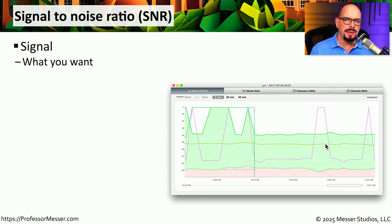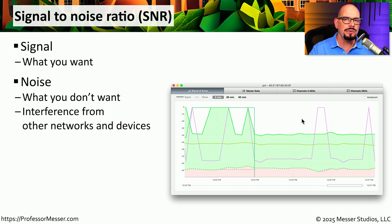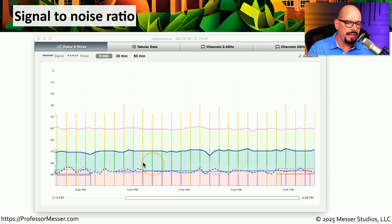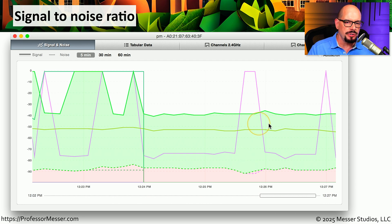Many operating systems can provide an overview of signal-to-noise ratios and create a graph over time so you can see how much interference may be in the air. With a signal-to-noise ratio (SNR), we want to know how much signal we're receiving compared to how much noise or interference we're getting. We obviously want the SNR to be a very large ratio — you don't want a one-to-one relationship between signal and noise. Ideally you would have much more signal and very little noise, giving users a much better wireless experience.